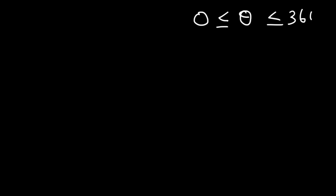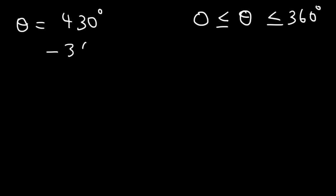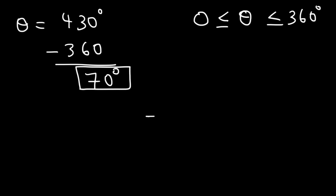Find a positive coterminal angle that is between zero and 360 degrees. Let's say the angle you're given is 430 degrees. This is not between zero and 360. Because this is greater than 360, to find the coterminal angle all you need to do is subtract 430 by 360, and this will give you 70. So 70 is a coterminal angle of 430.